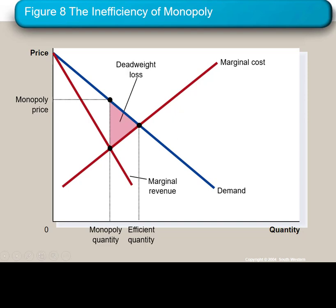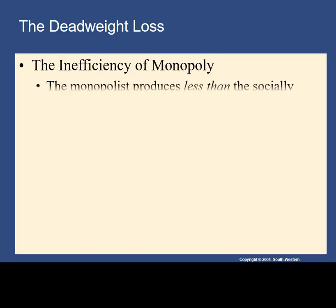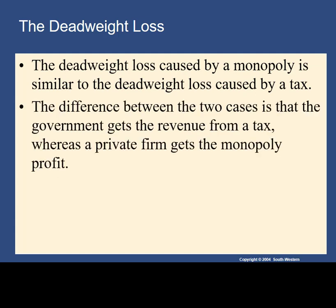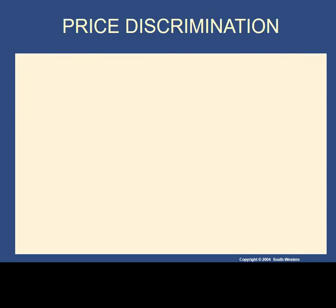The monopolist produces less than what would be efficient, and that generates deadweight loss. In the presentation you saw in class and in the book, they compare this to the deadweight loss caused by a tax. The real difference is that the monopolist is getting that extra revenue as opposed to the government in the case of a tax.